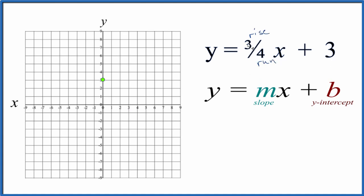So we're going to rise one, two, three, and go over one, two, three, four. And we're going to do that from our y-intercept. So one, two, three, and we go over one, two, three, four.